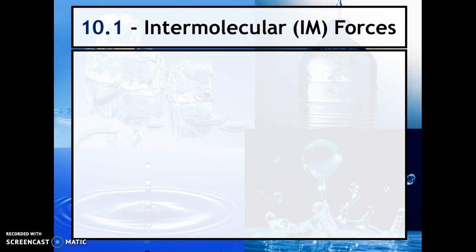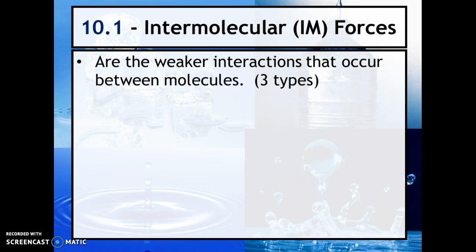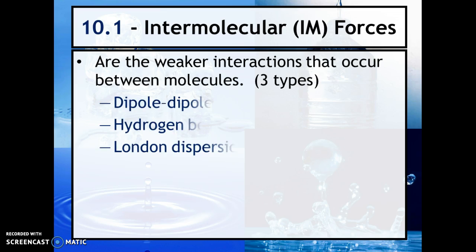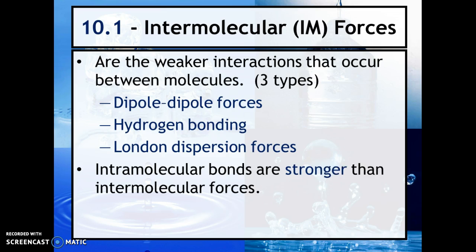On the other hand, we have intermolecular forces, sometimes abbreviated as IM forces. These are weaker attractions that occur between molecules. You already know these three types: dipole-dipole forces, hydrogen bonding, and London dispersion forces. Remember there are two that fall under London dispersion, but both deal with electrons. Intramolecular bonds are stronger than intermolecular forces — bonds are stronger than forces.